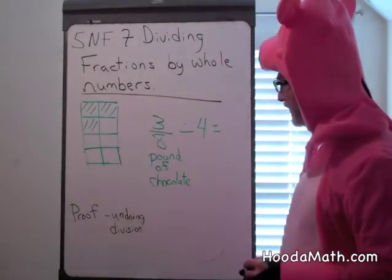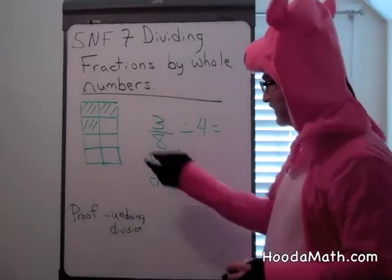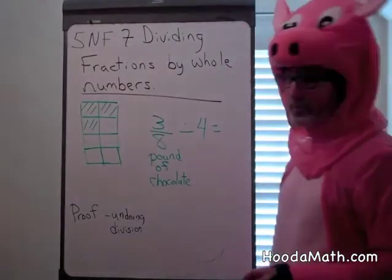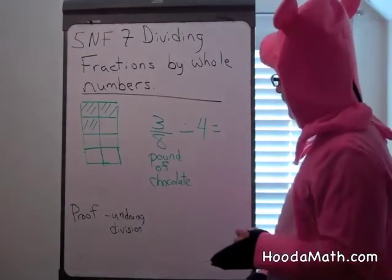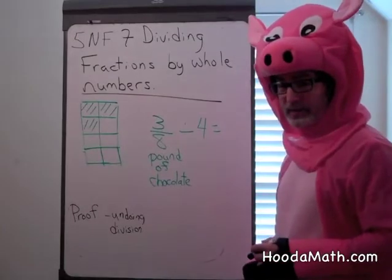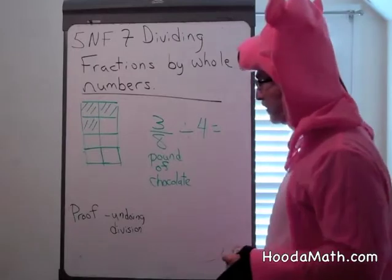Let's say you had a pound of chocolate, but then you ate five-eighths of that chocolate. Who's the piggy? Anyway, you have three-eighths of a pound left and you want to divide it among three of your friends and yourself, so among four people.